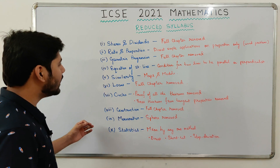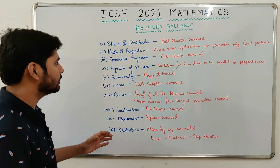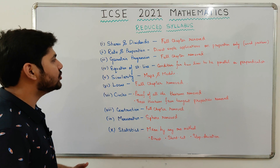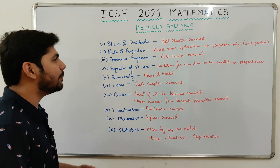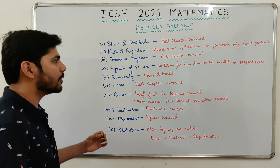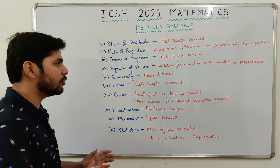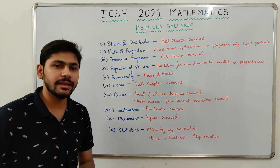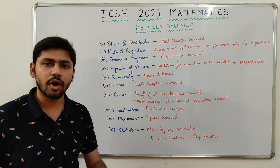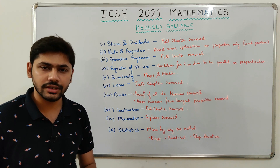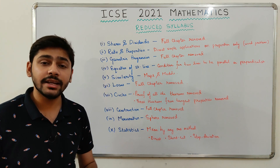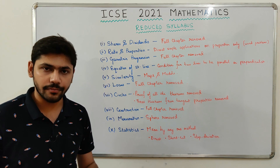Second, Ratio and Proportion. From Ratio and Proportion, direct simple applications on proportion have been removed. That means word problems from the chapter Ratio and Proportions have been removed.